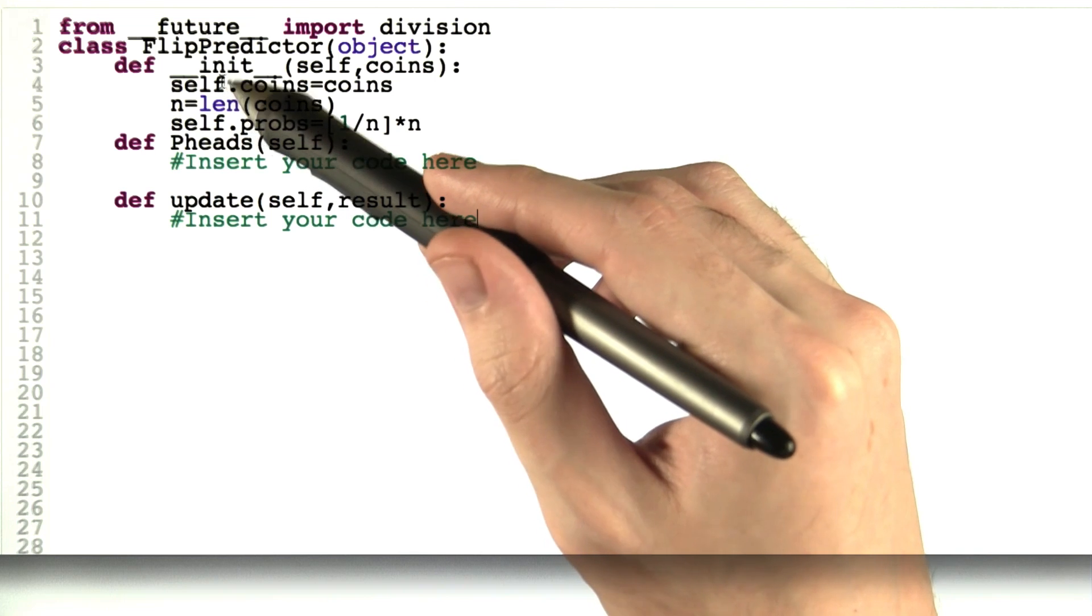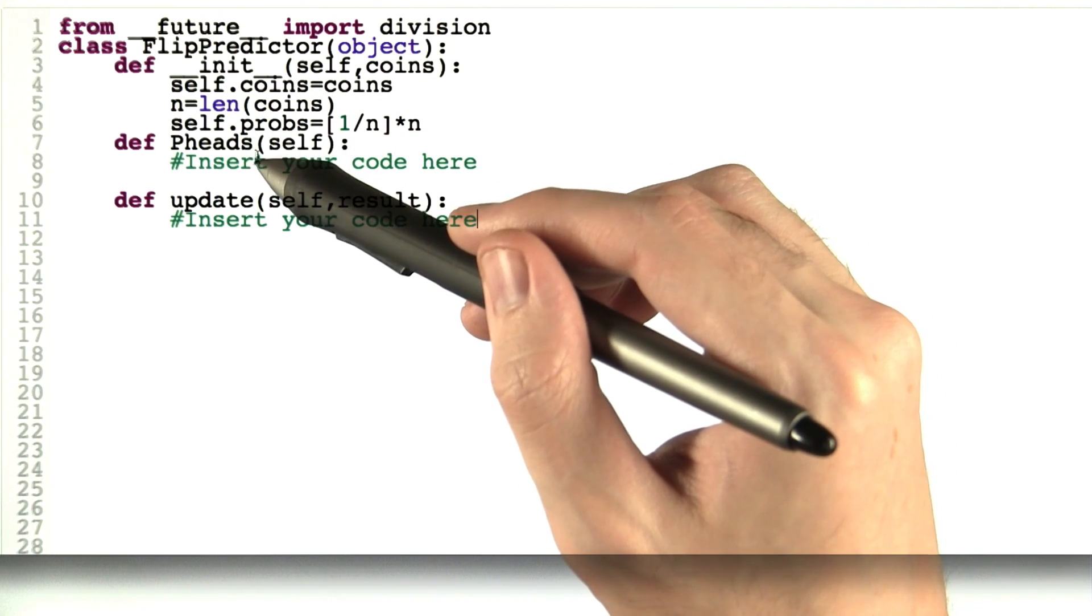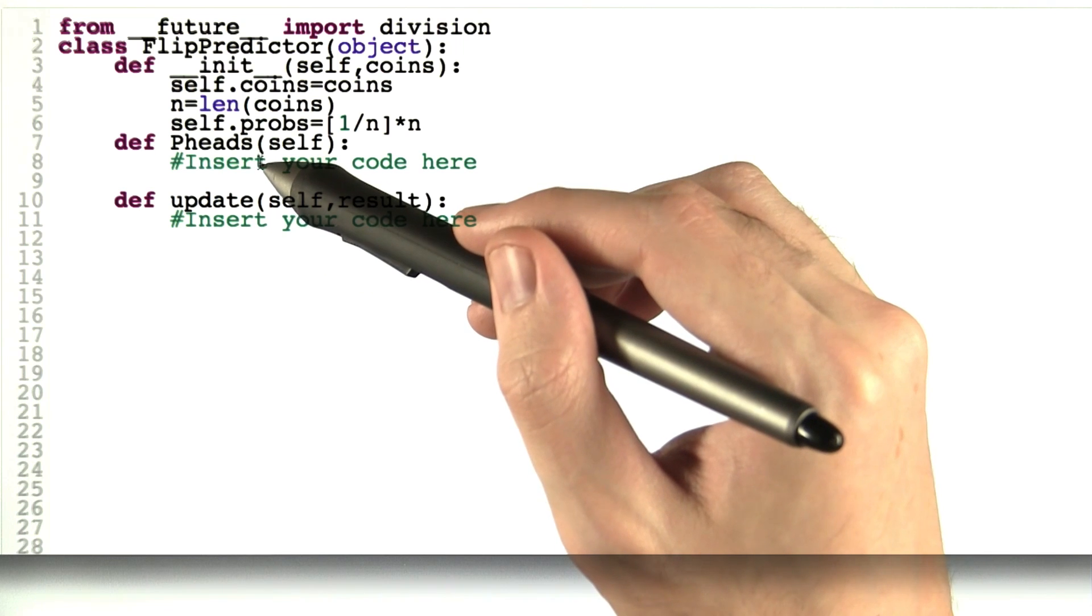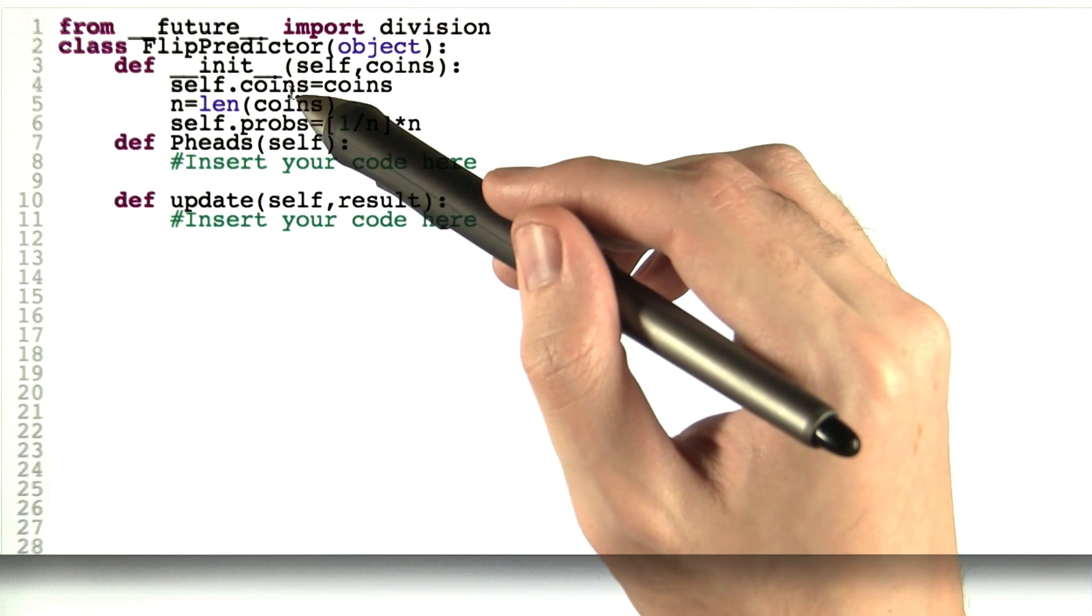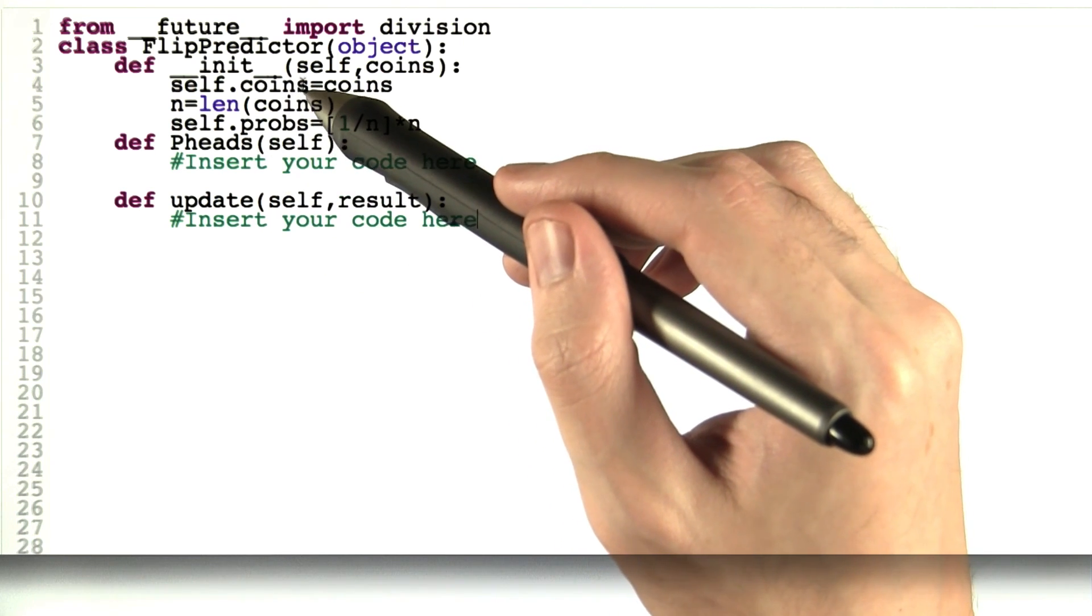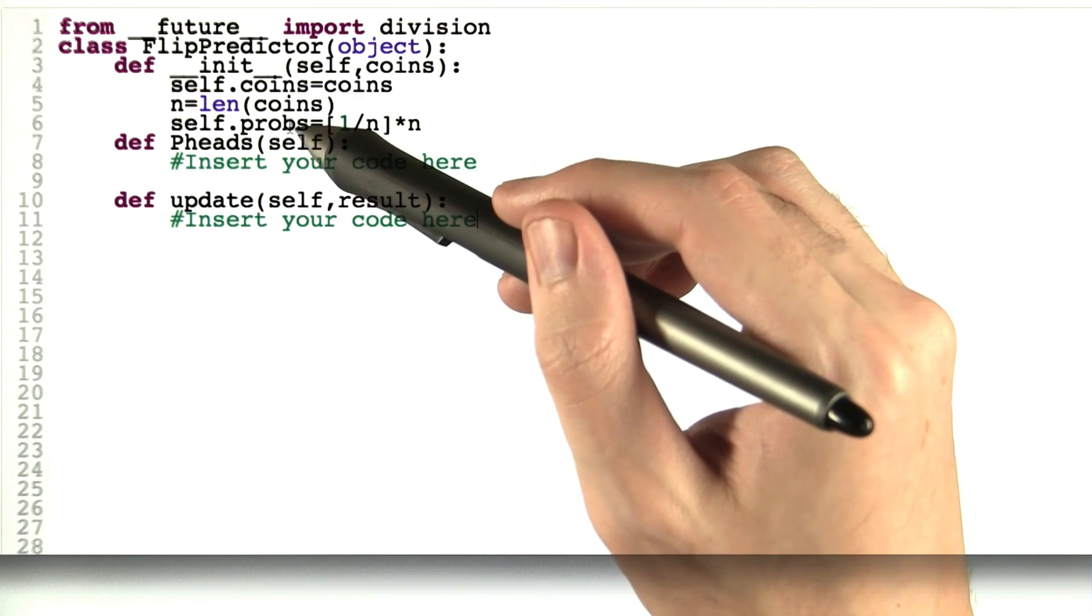So here we just set up our data and that is we're given a set of coins in our bag and we just call that self.coins. And so in these functions, down here you're going to be able to access the coins in your bag as self.coins. And that's going to be a Python list.